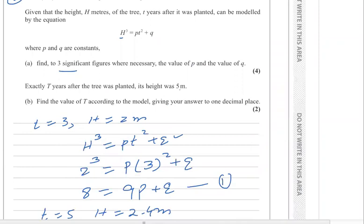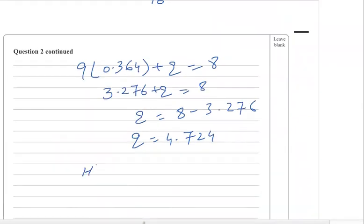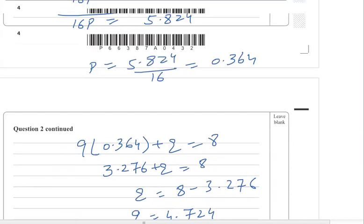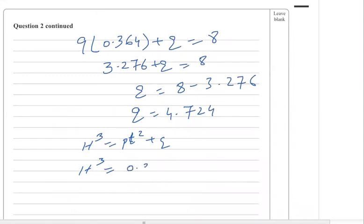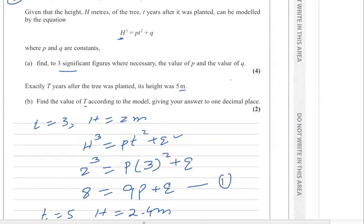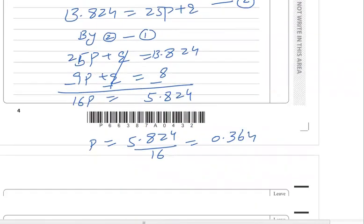Substituting the values of p and q into the model: h³ = 0.364t² + 4.72. Since the height is 5 meters, we substitute h = 5. So 5³ = 0.364t² + 4.72, giving 125 = 0.364t² + 4.72.